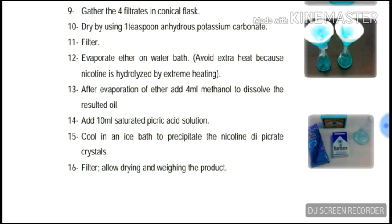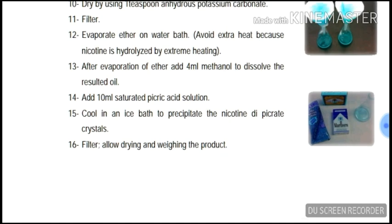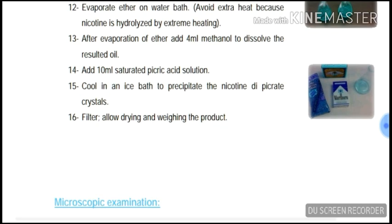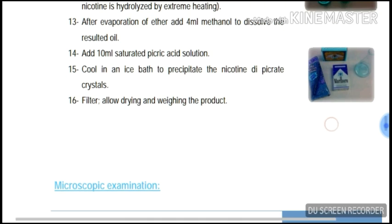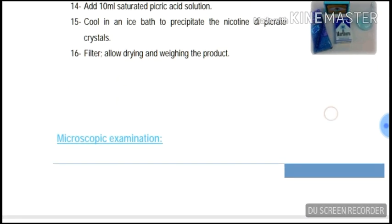Evaporate the ether on a water bath, but avoid extra heat because nicotine is hydrolyzed by extreme heating. After evaporation of the ether, add 4 ml methanol to dissolve the resulting oil. Add 10 ml saturated picric acid solution cooled in an ice bath to precipitate the nicotine dipicrate crystals. Filter, dry, and weigh the product.